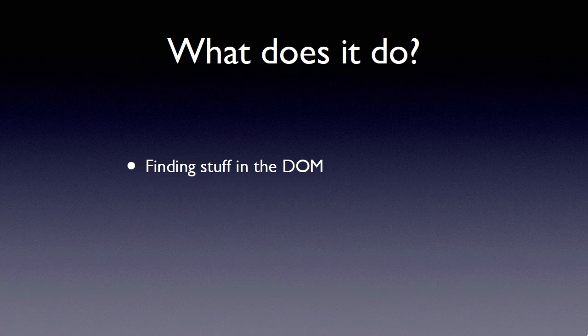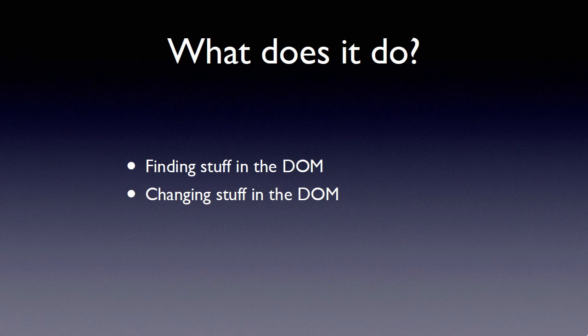So what does jQuery do? Well, the first thing it does is make it very easy to find stuff in the DOM — essentially what is in the web browser when viewing the web page. For example, if you're doing form validation, typically you have to find that form field to see what it is, and jQuery makes that easy. Once you've found something, jQuery also makes it very easy to change those things — for example, you could set that form field, or maybe you have a div that you want to set with some text when a form is not filled in correctly.